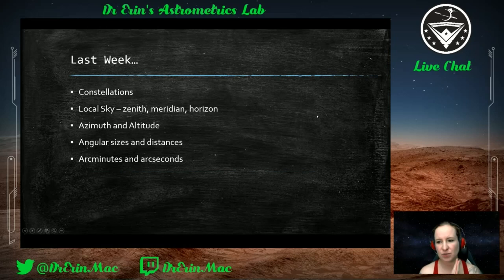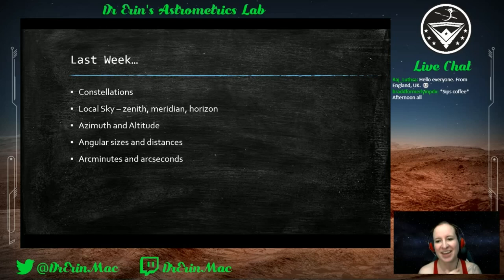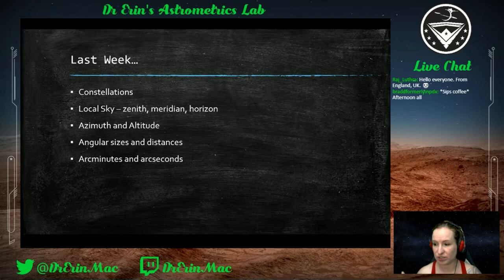Last week we talked about constellations. We always think of them as images — drawings in the sky from bright star points — but what they really are is defined regions. We've broken up the sky into 88 different proportions throughout the sky, and those are our constellations, indicated by bright stars that form patterns.